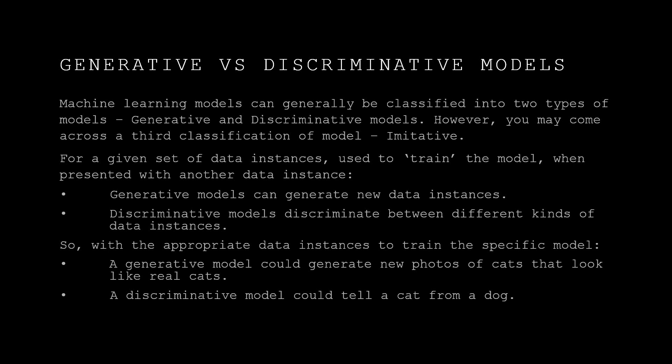Discriminative models discriminate between different kinds of data instances. For example, with the appropriate data instances to train the specific model, you could have a generative model which generates new photos of cats that look like real cats — that's where you've trained a generative model on photos of cats. A discriminative model could tell a cat from a dog. For that model, you've fed it examples of cats and dogs, and the model is built so that when you give it an example of something, it can discriminate and tell you yes, that's a cat or that's a dog.